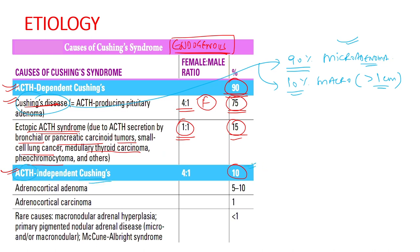ACTH independent Cushing syndrome, responsible for 10 percent of cases, is more common in females. It includes adrenocortical adenoma (most common among ACTH independent causes), adrenocortical carcinoma, macronodular adrenal hyperplasia, primary pigmented nodular adenocortical disease, and McCune-Albright syndrome. There are also genetic associations with syndromes like MEN1, Carney complex, and McCune-Albright syndrome.